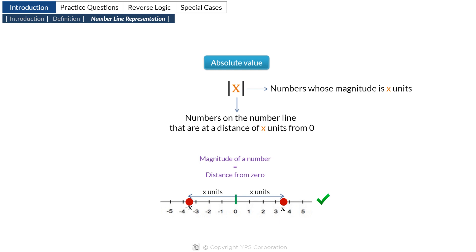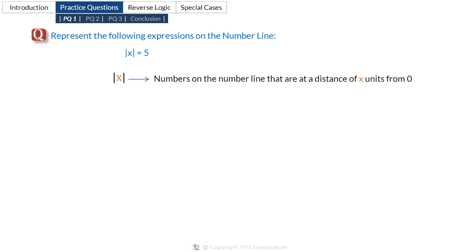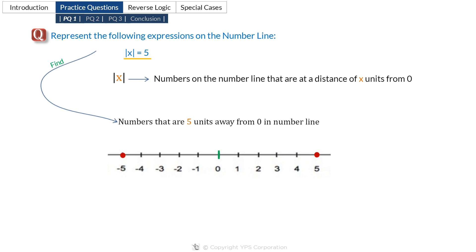Now let's practice this concept a little bit more. We need to represent the following expressions on the number line. What does absolute value of x represent? Absolute value of x represents those numbers on the number line that are at a distance of x units from 0. So what does the equation |x| = 5 mean? This question is asking us to find those numbers on the number line that are at a distance of 5 units from 0. Which numbers are at a distance of 5 units from 0? 5 and minus 5. So |x| = 5 has two solutions: 5 and minus 5.